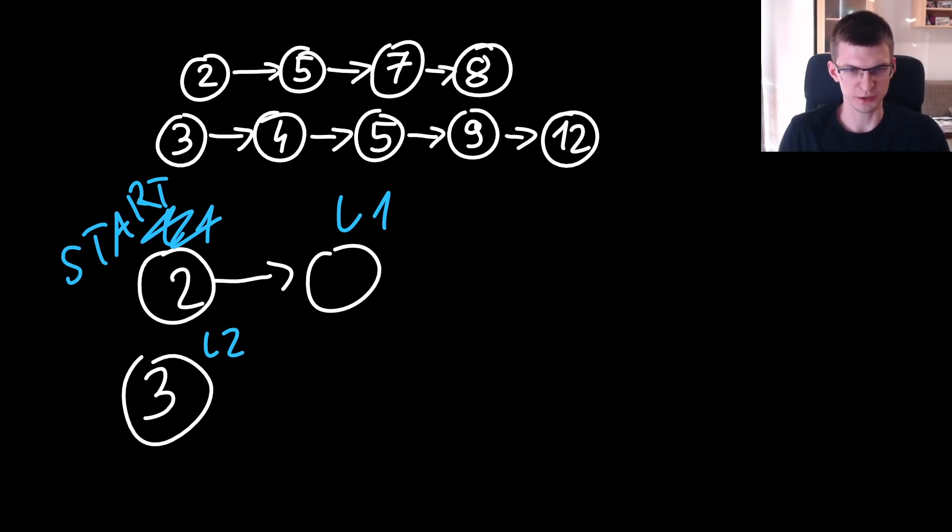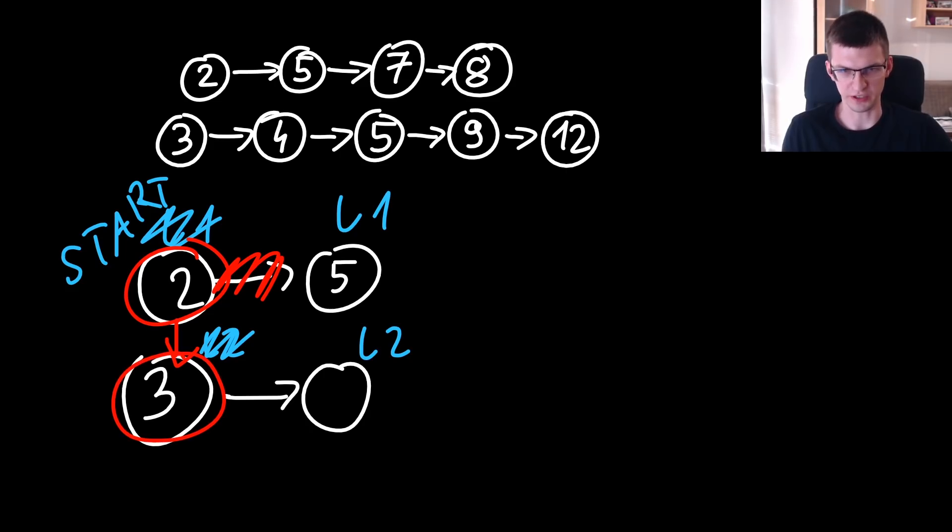Then we compare L2 with L1 again. There will be 5 here so we move L2 to the next node but we obviously need to create a new combined list. After start, after node with value 2, there should be 3. I will change this pointer into the one pointing to 3.